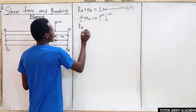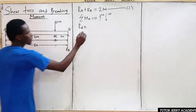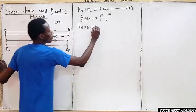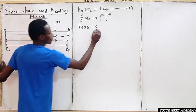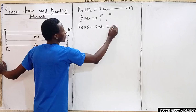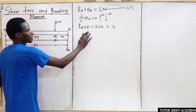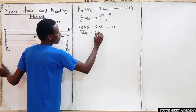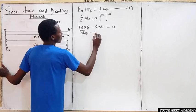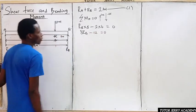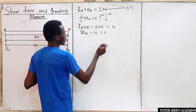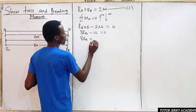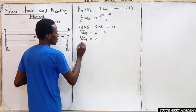So we have Rb times 8 minus 2 times 6 equals zero. That gives us 8Rb minus 12 equals zero. Taking 12 to the other side: 8Rb equals 12. Dividing both sides by 8 gives us Rb.